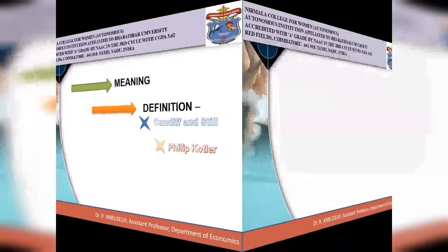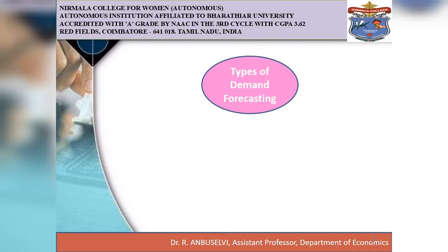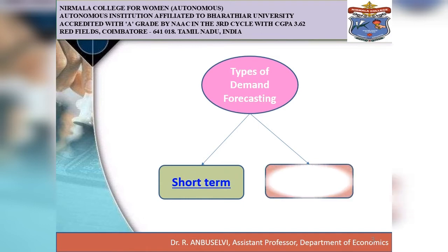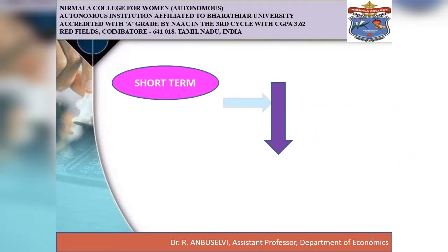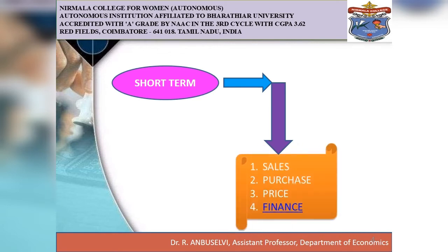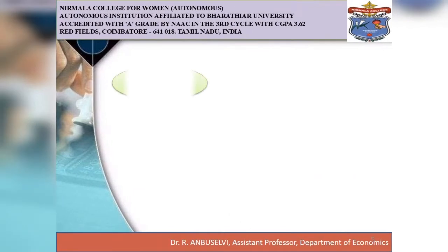There are two important types of demand forecasting. One is short-term demand forecasting and another one is long-term demand forecasting. Short-term demand forecasting is limited to a short period, usually for a period of one year. It relates to policies regarding sales decisions, purchase policy, pricing policy, and financing policies. It refers to the existing production capacity of the firm and is essential for formulating the price policies of a company.